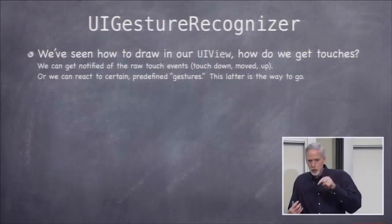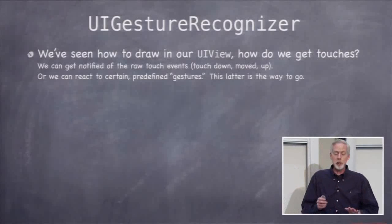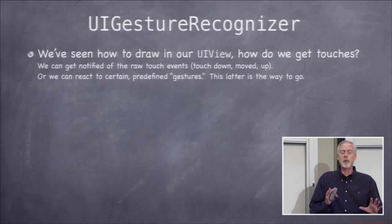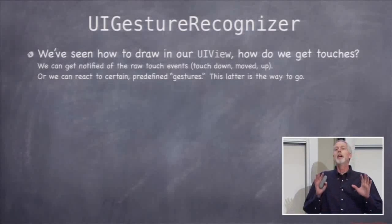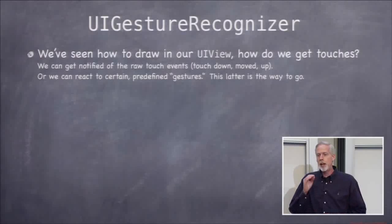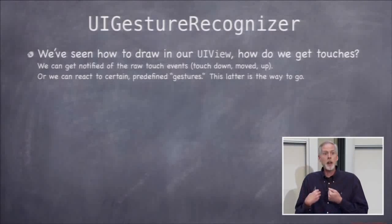That's the drawing side of things. Now let's talk about the input side — recognizing gestures. It is possible to get the raw data about fingers touching the screen: how many are touching, where the fingers are, when they move. It used to be you had to look at all that data to figure out what the user was doing — swiping or pinching. It was quite esoteric code. But the last few iOS releases have had the right way to do it: gesture recognizers. The system will recognize certain gestures and tell us when those gestures are happening.